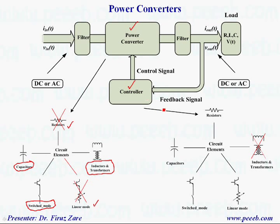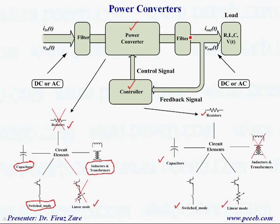In the control circuit, because efficiency is not a big issue, we have elements like resistors, capacitors, and transistors operating in switch mode or linear mode. The output filter depends on the application, but normally consists of an inductor and capacitor. This filter is quite important — it's a line filter and EMI filter.